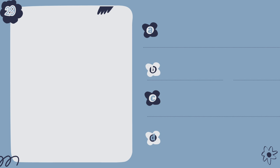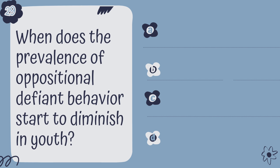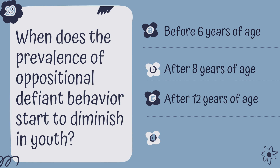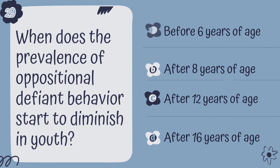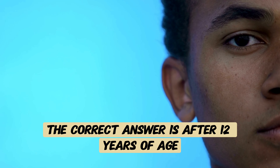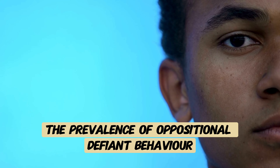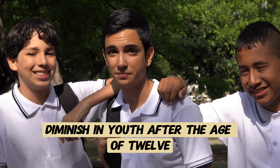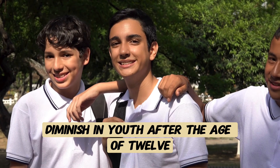Question 29. When does the prevalence of ODD behavior start to diminish in youth? A. Before 6 years of age, B. After 8 years of age, C. After 12 years of age, or D. After 16 years of age? The correct answer is C, after 12 years of age. The prevalence of oppositional defiant behavior typically starts to diminish in youth after the age of 12.